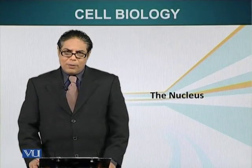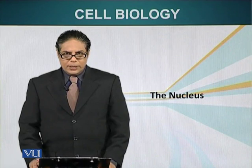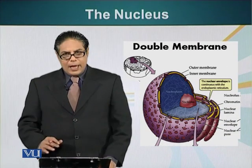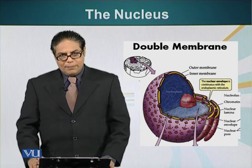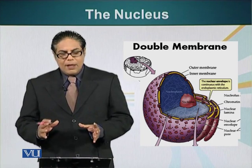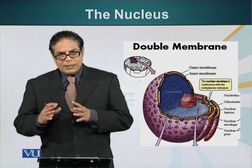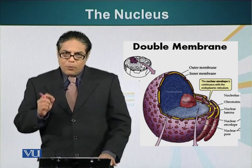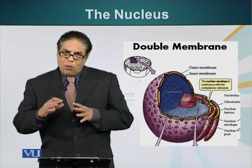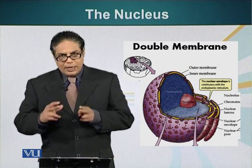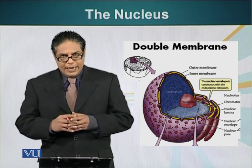Now we will talk about the largest organelle in a eukaryotic cell: the nucleus. In a previous module I introduced the nucleus as the governor house of the cell. Nucleus dictates the function of a cell. The function of a cell is dependent upon the proteins it has. The recipes of all the proteins are contained in the nucleus in the form of genetic code, which is made up of DNA.